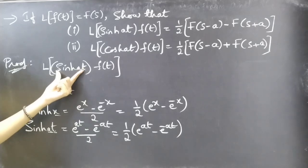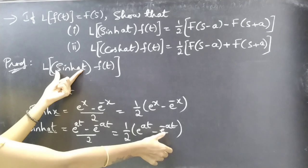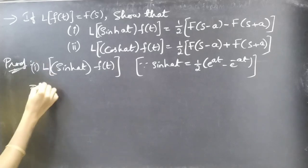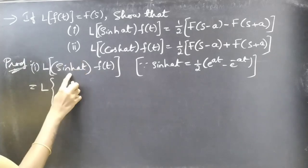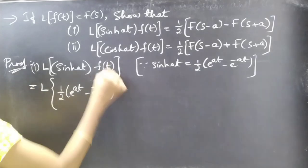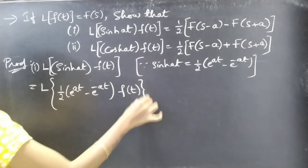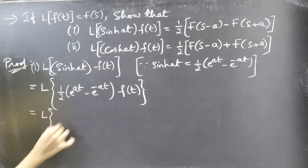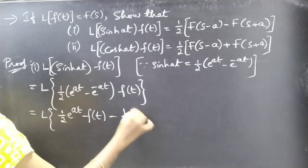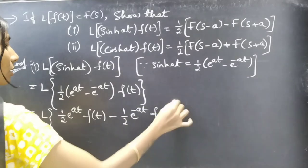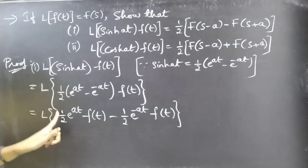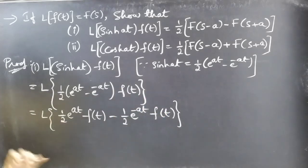Now we replace sinh(at) with (1/2)(e^(at) - e^(-at)) in L{sinh(at) · f(t)}. This gives us L{(1/2)e^(at)f(t) - (1/2)e^(-at)f(t)}. Now applying the linearity property, since we have constants times functions, we can separate these terms.